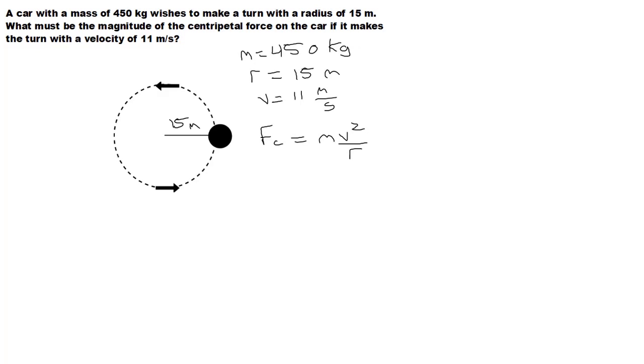I'm just going to plug and chug here. So I can say that the centripetal force equals the mass, which was 450, times the velocity squared over the radius, which was 15. So I'm going to do that math very quick: 450 times 11 squared, which is 121, over 15.